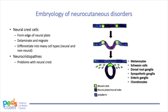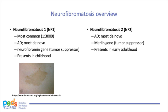Today we will focus on the two most common neurocutaneous disorders: neurofibromatosis and tuberous sclerosis. Neurofibromatosis includes NF1, NF2, and schwannomatosis. NF1 is the most common, with an occurrence of 1 in every 3,000. It is an autosomal dominant disorder caused by mutations in the tumor suppressor gene neurofibromin on chromosome 17, with most cases occurring de novo. NF2 is caused by mutations in the NF2 tumor suppressor gene on chromosome 22, encoding the protein Merlin. Both NF1 and NF2 are characterized by growth of tumors throughout the nervous system. For this case, we will focus on NF1.